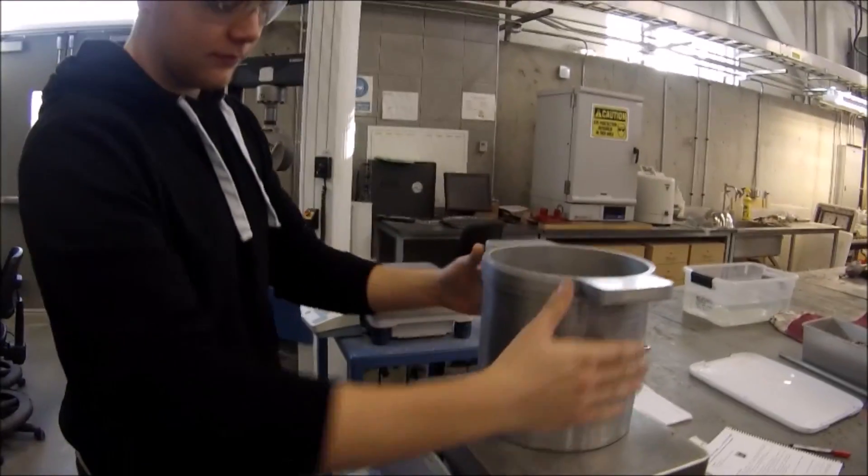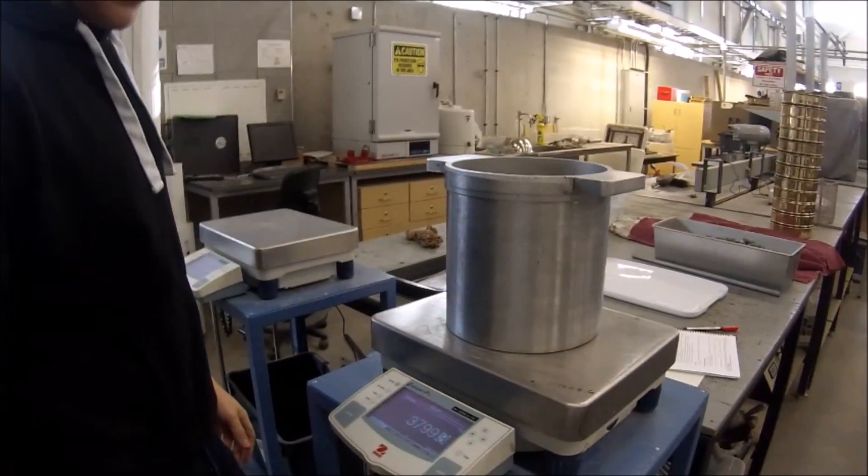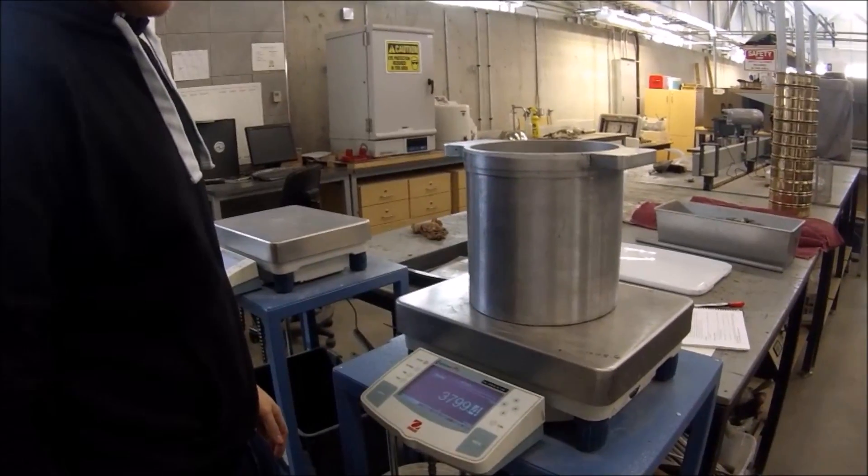This section of the lab deals with determining the bulk density of the aggregates. First, weigh the cylindrical measure to determine the dry weight of the measure. Also be sure to record the temperature of the water.